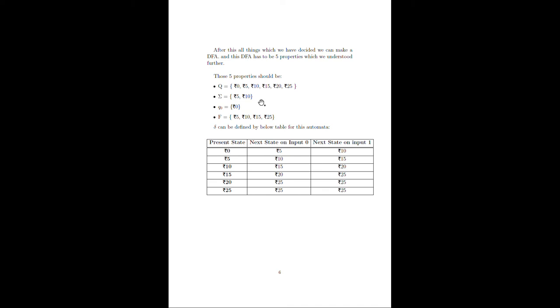Q₀ equals rupees 0 because the machine shows us a 0 rupees balance on starting. Final states F equals {5, 10, 15, 25} and we can see the table for this automata.